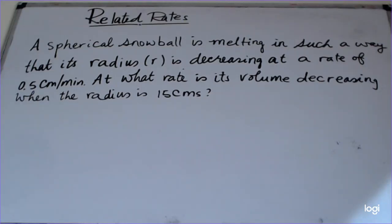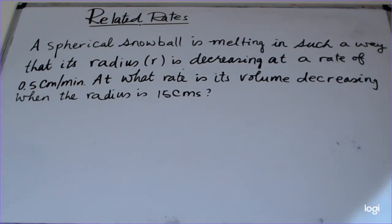In this video we will talk about related rates. The particular example we're going to consider is: a spherical snowball is melting in such a way that its radius r is decreasing at a rate of 0.5 cm per minute. At what rate is its volume decreasing when the radius is 15 cm?